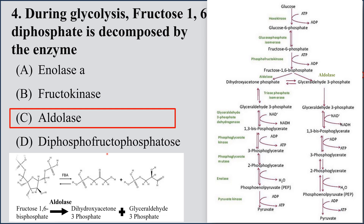They have asked about the reaction also known as the splitting reaction or splitting phase in glycolysis, in which fructose 1,6-bisphosphate, with the help of enzyme aldolase, is converted into a ketose and an aldose — dihydroxyacetone phosphate and glyceraldehyde-3-phosphate. Glyceraldehyde-3-phosphate has the aldehyde group while dihydroxyacetone phosphate has the ketone group.